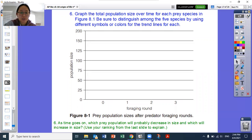And then we'd be graphing the population sizes for each round and seeing what happens to each prey species. As time goes on, which prey population will probably decrease in size and which one will increase in size? You're going to use your ranking on the last slide where you answered it to decide over time what will happen to the population dynamics if these prey are all living in the same environment. Who's going to have a lot of individuals in their population at the end and who's going to have very few or maybe be going extinct?